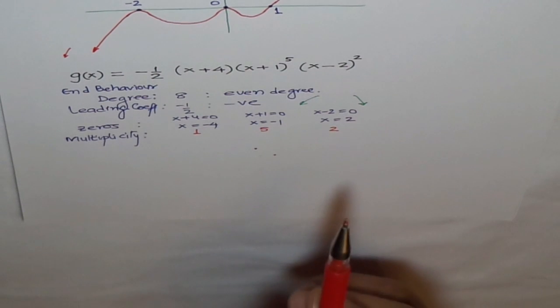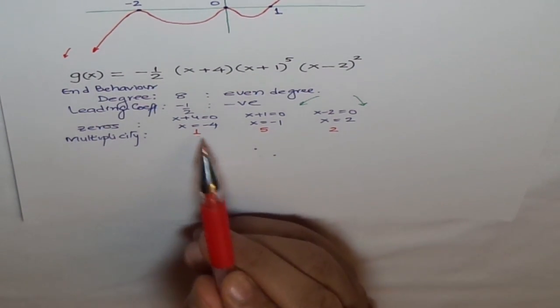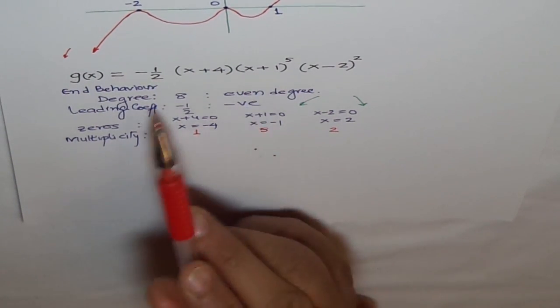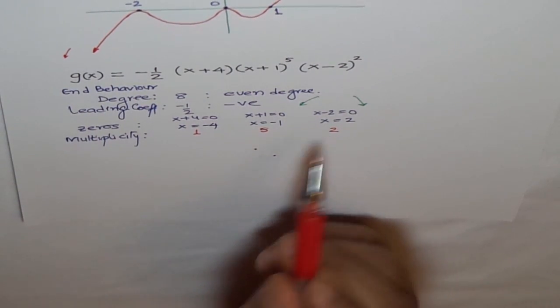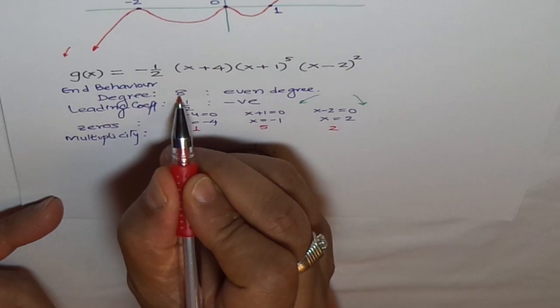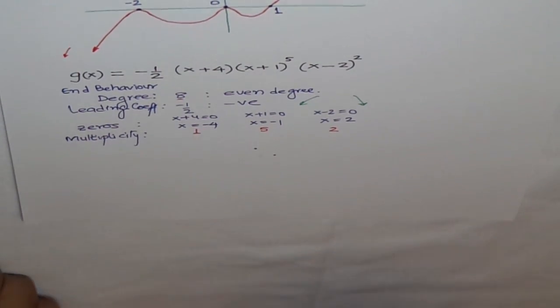These are all real zeros. When we add them up, it adds to the degree of our polynomial. 1 plus 5 is 6, 6 plus 2 is 8, which equals 8 degree.